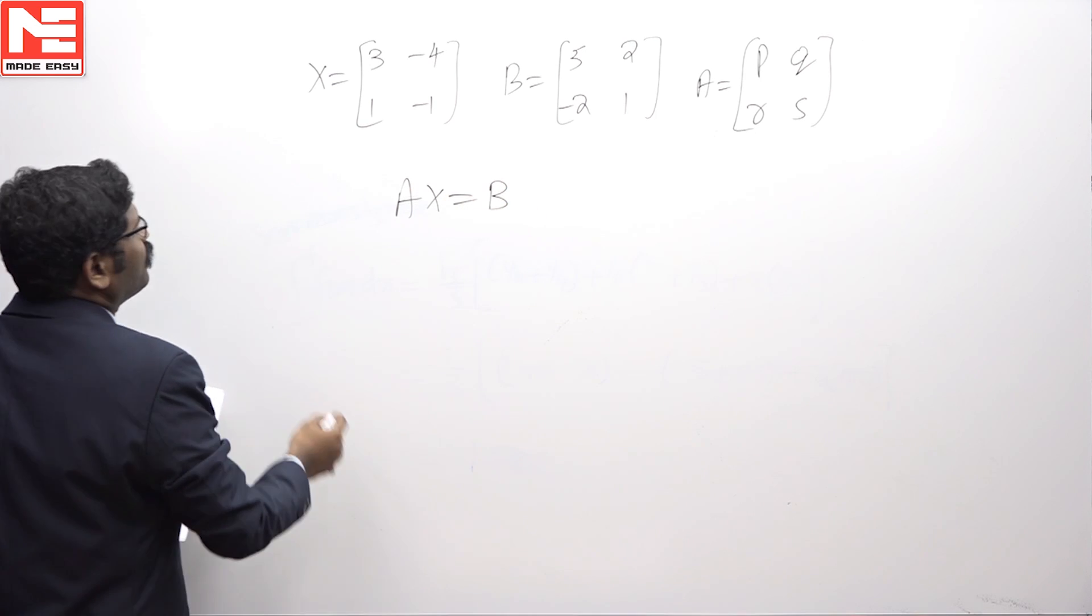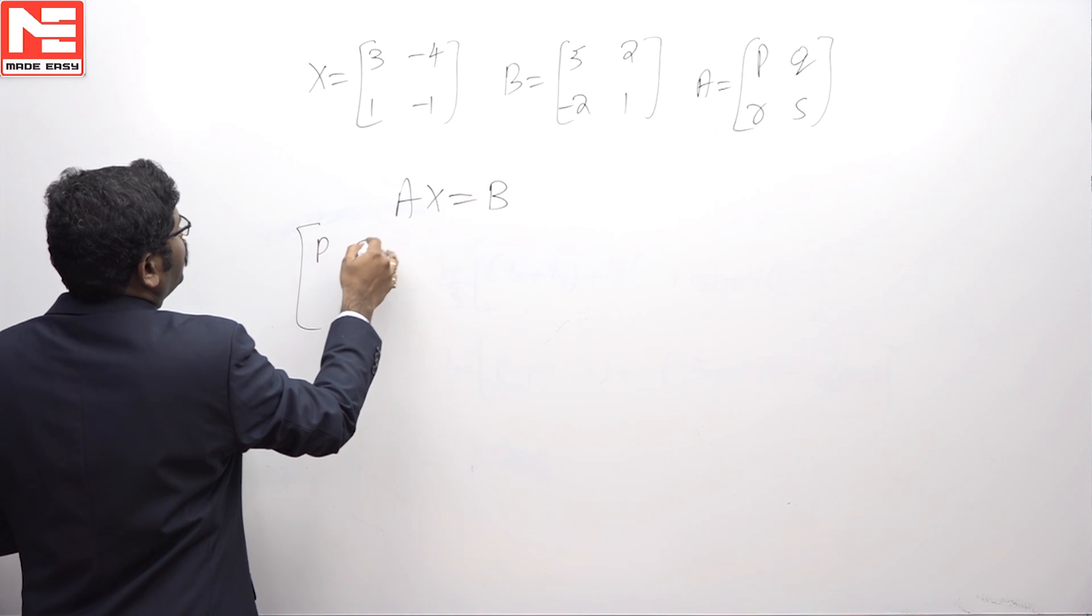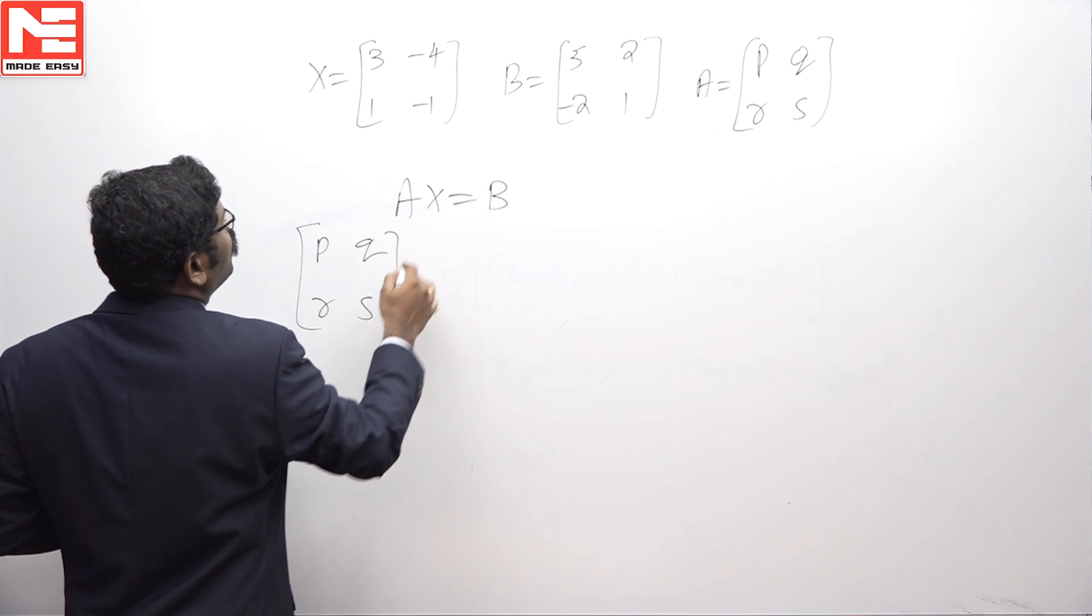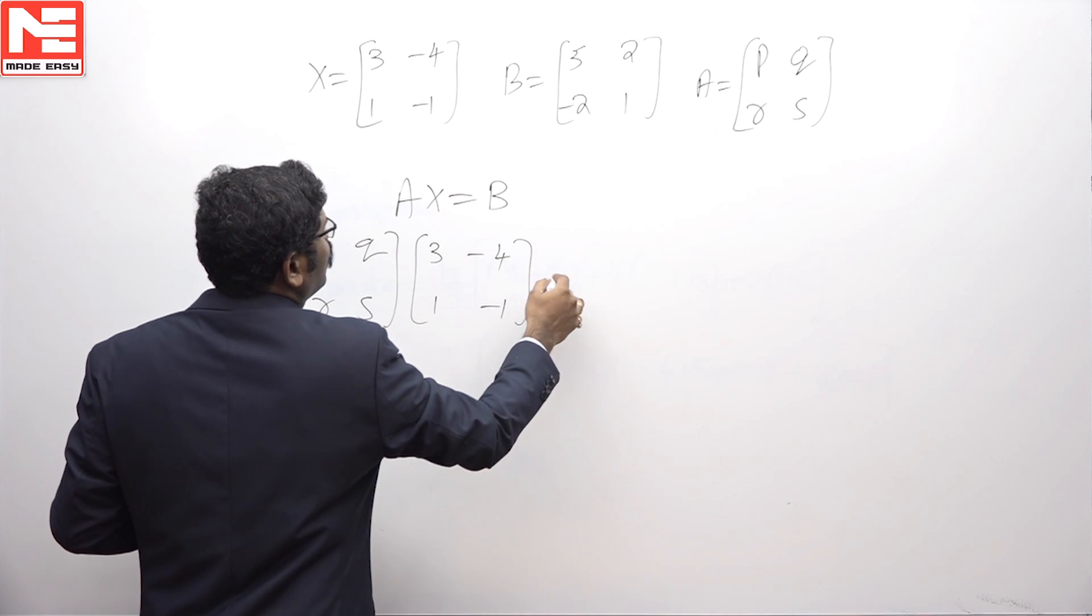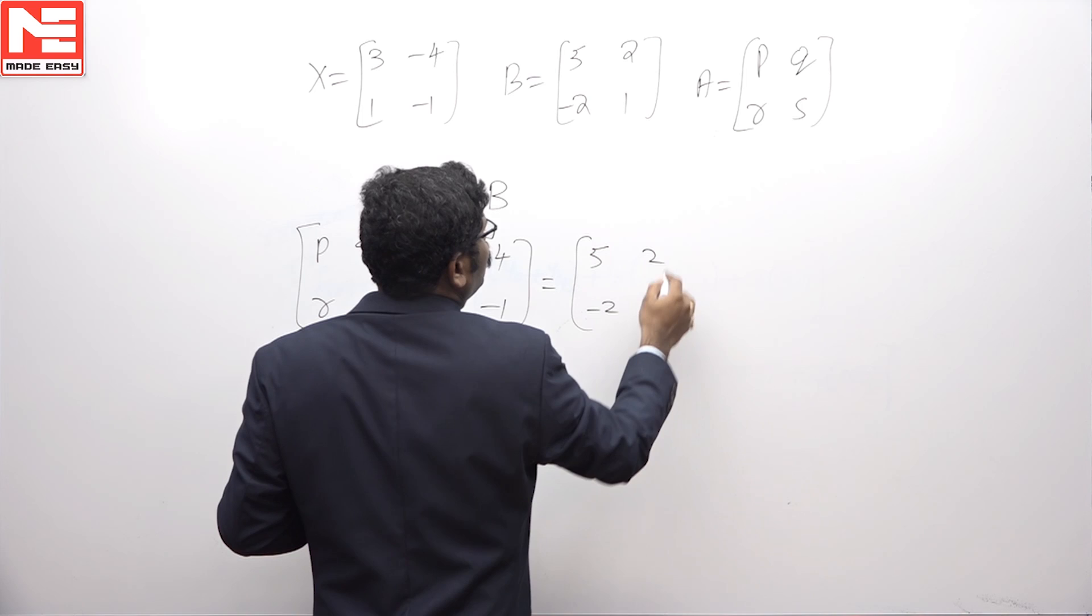Now, if AX equals B, then P, Q, R, S into X, 3 minus 4, 1 minus 1 equals 5, 2, minus 2, 1.